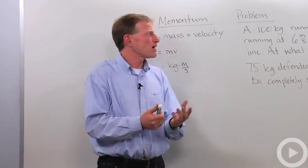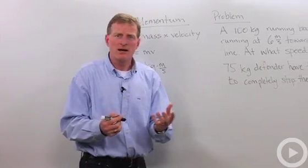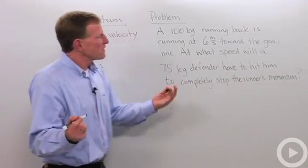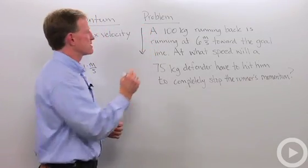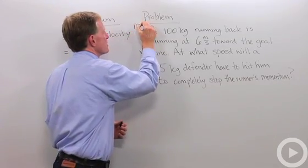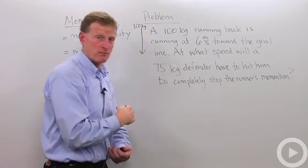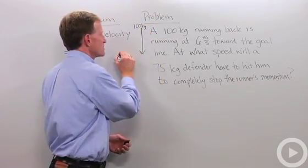So let's look at an example of a problem with momentum. Football players might like this. I've got a football player running towards the goal line, and he weighs 100 kilograms, which is about 220 pounds. It's a big fullback. Here's my goal line.